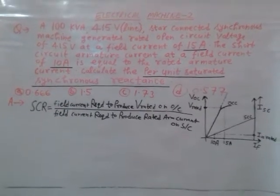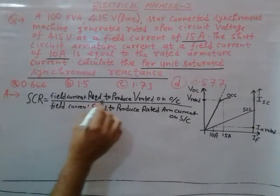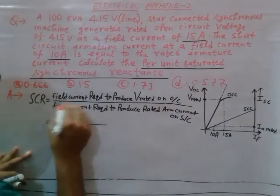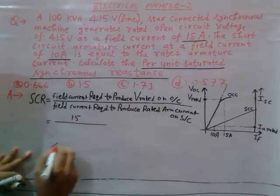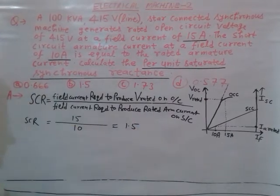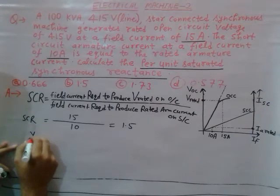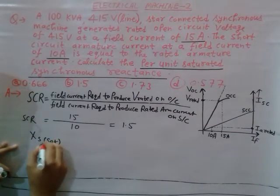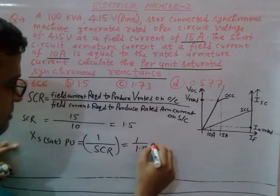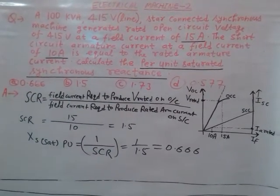SCR, the Short Circuit Ratio, is the ratio of field current required to produce rated voltage on open circuit divided by field current required to produce rated armature current on short circuit. So the numerator is 15 and the denominator is 10, giving SCR = 1.5. The per unit saturated synchronous reactance X_saturated (per unit) is nothing but the inverse of the short circuit ratio: 1 divided by 1.5, which equals 0.666.